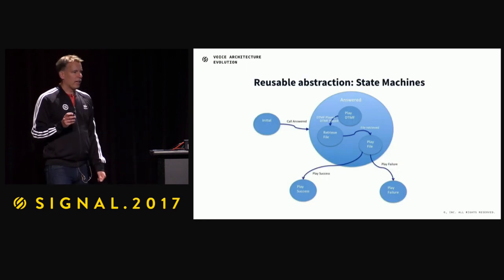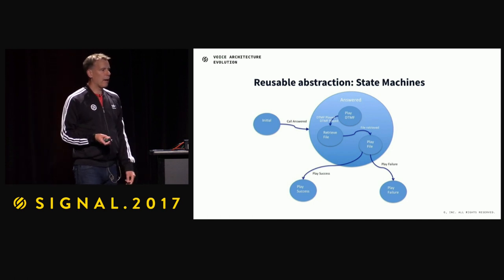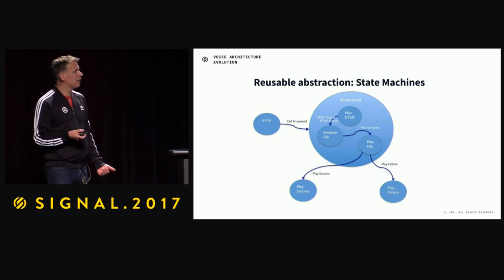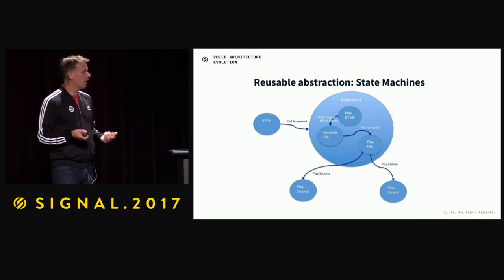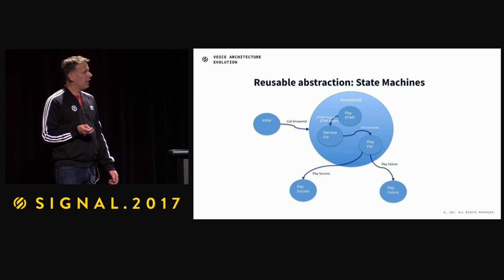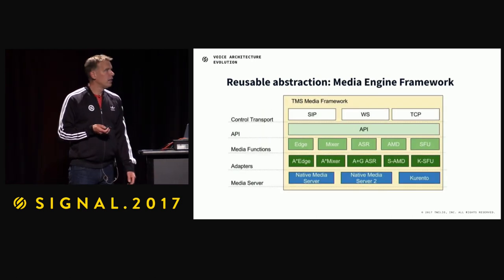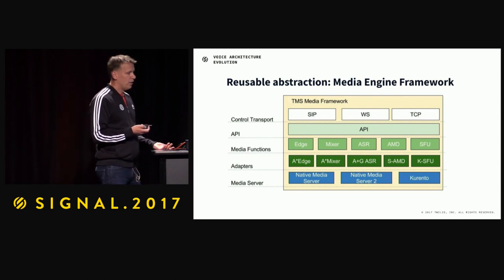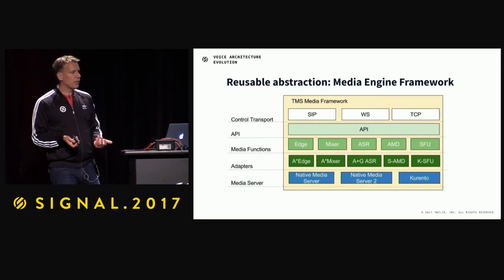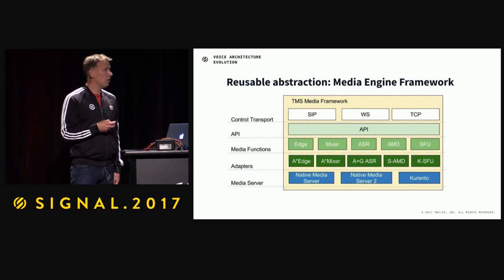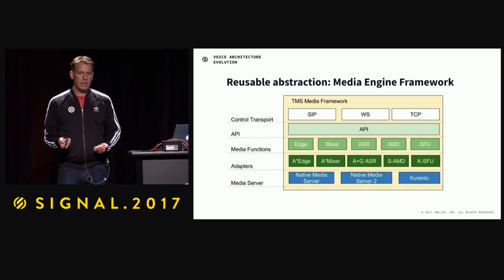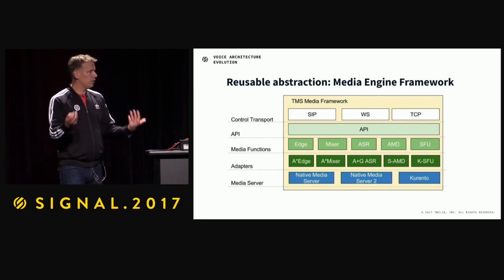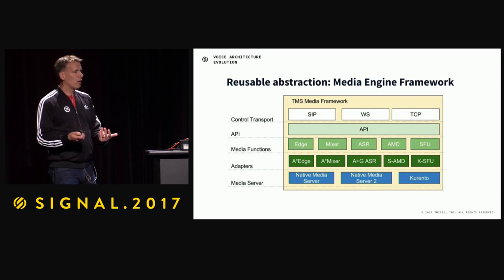Another way of increasing agility has been to develop reusable abstractions. For communication services, state machines is the one abstraction that works really well for calls and call-related services. We've taken this one step further and created a media engine framework that we reuse across all new services. As an example, the recent enhanced answering machine detection feature and the automatic speech recognition we released yesterday are both built on top of the same framework, reusing a lot of code. This is another way of increasing agility for your team.